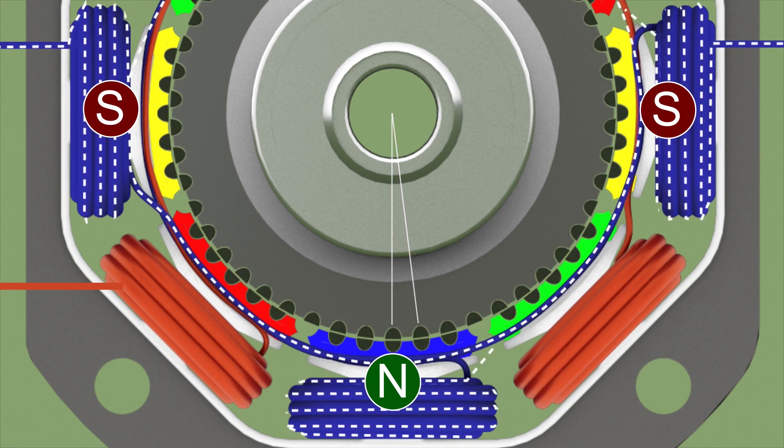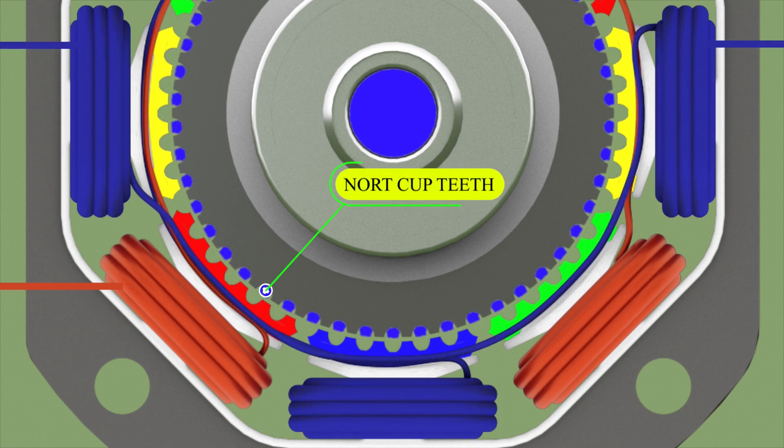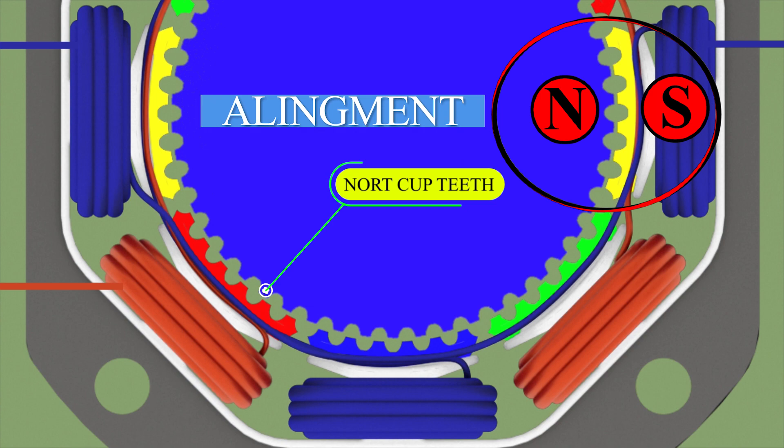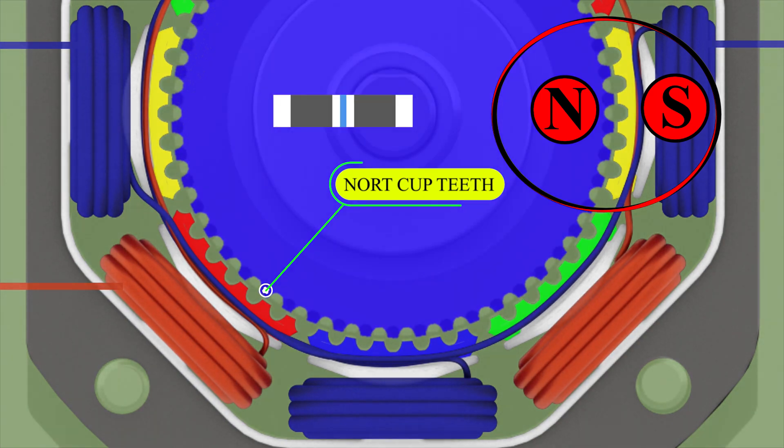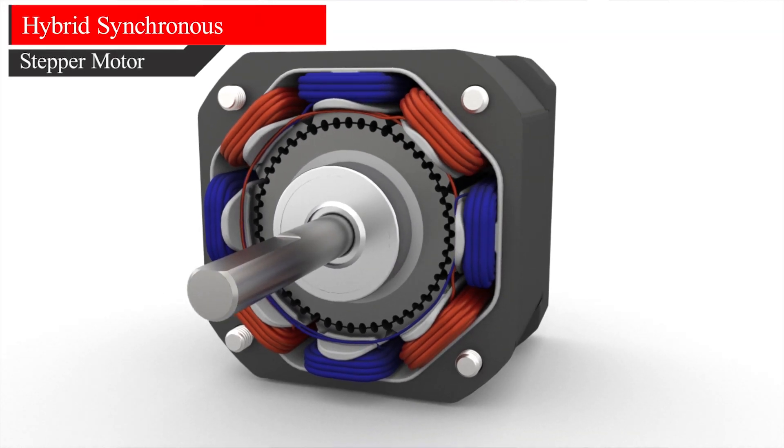It's important to know that the north end cap teeth are placed in between the south end teeth. In this way, alignments of the opposite polarity poles are guaranteed. This is the working principle of hybrid stepper motors. They are ideal for applications where precise movements and simple control are needed.